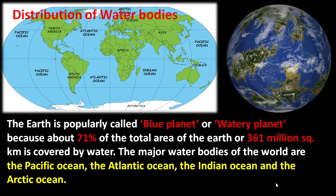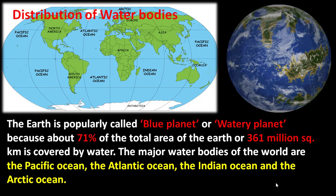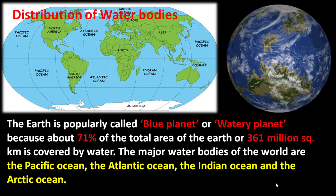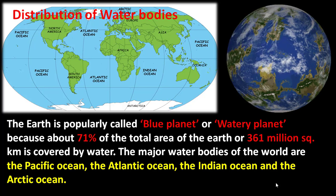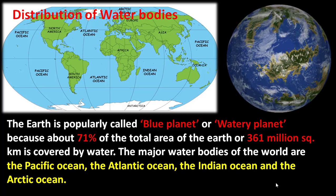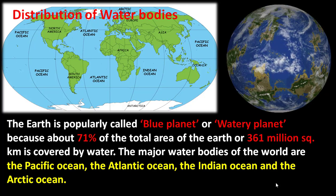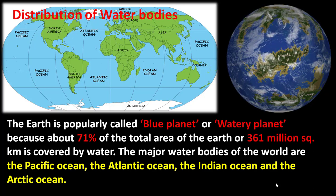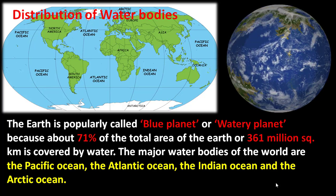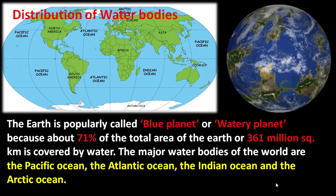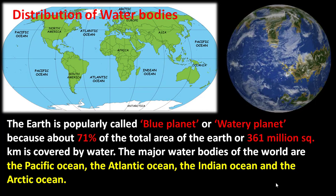The concept of distribution of water bodies: the Earth is popularly called the blue planet or watery planet because about 71 percent of the total area of the Earth — around 361 million square kilometers — is covered by water. The major water bodies of the world are the Pacific Ocean, the Atlantic Ocean, the Indian Ocean, and the Arctic Ocean.